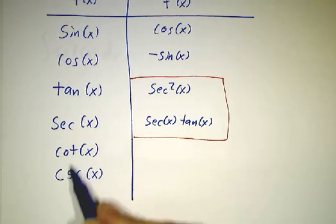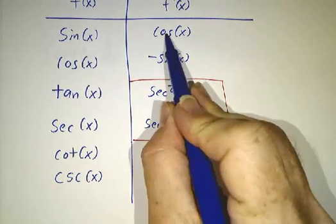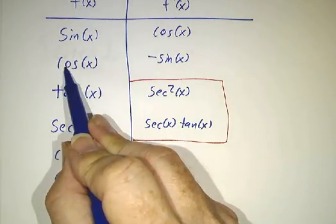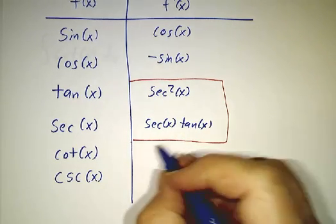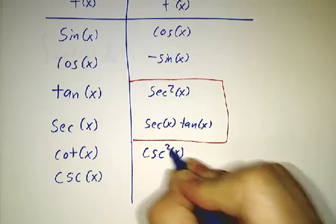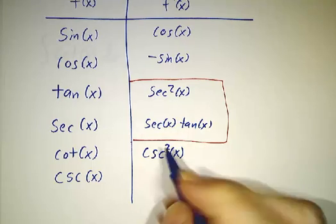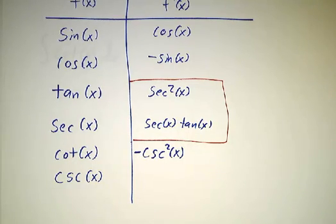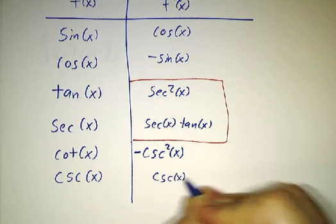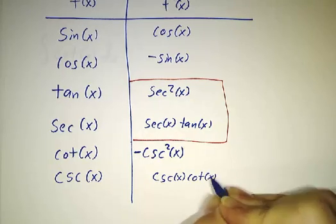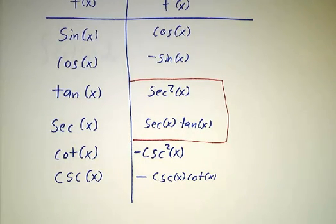The derivative of all the co-functions just looks like the derivative of the original functions with a sign shift. If the derivative of sine is cosine, the derivative of cosine is co-cosine — that's sine — but with a minus sign. The derivative of cotangent looks just like the derivative of tangent, except instead of secant squared you get cosecant squared, and you get a minus sign. The derivative of cosecant looks just like the derivative of secant, except instead of secant you get cosecant, instead of tangent you get cotangent, and you get a minus sign. So that's it for derivatives.